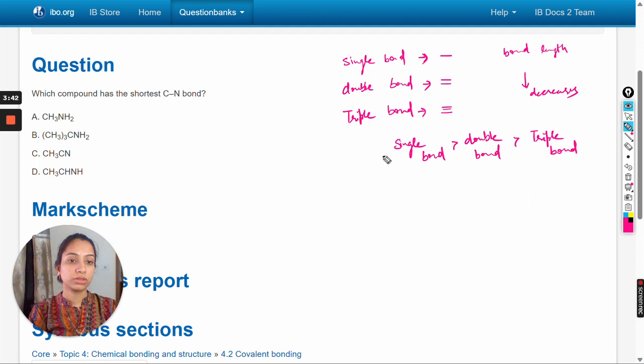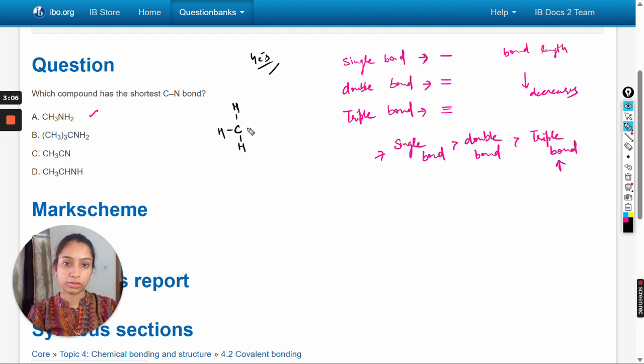Single bond is of longest length and triple bond is of shortest length. Here first is CH3NH2. We draw the Lewis structure. Carbon has four valence electrons and shares them with four atoms through four bonds to complete its octet.